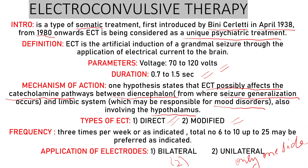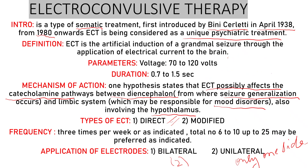For electrode placement, the reference points are the lateral canthus of the eye and the tragus of the ear. Electrodes are placed one and a half inches above the midpoint of a line drawn from the lateral canthus of the eye to the tragus of the ear — this is done bilaterally on both sides. In unilateral ECT, the electrode is placed on only one side, preferably the non-dominant side, meaning the side the patient does not use.